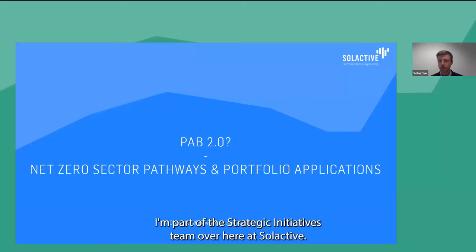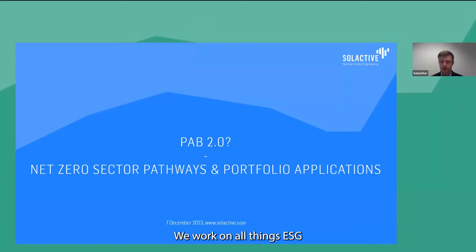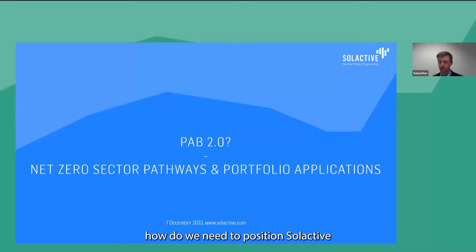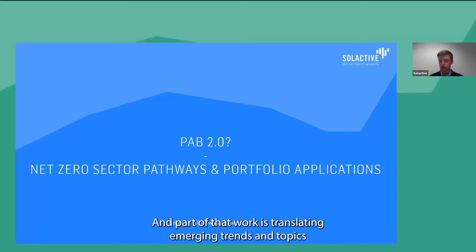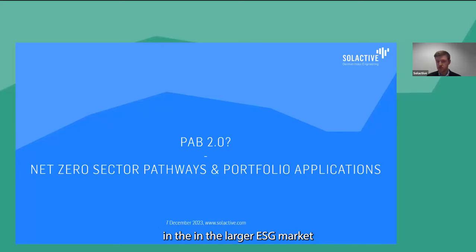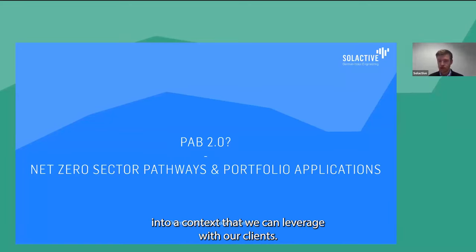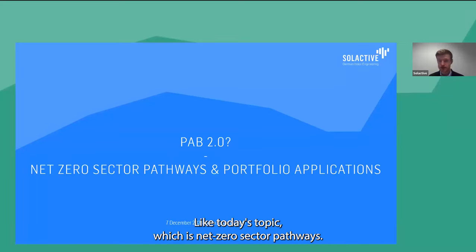My name is Florian Mueller. I'm part of the Strategic Initiatives team at Selective. We work on all things ESG from a strategic point of view — meaning how do we need to position Selective in terms of our expertise, our products, and our services to provide the best possible experience to our client base. Part of that work is translating emerging trends and topics in the larger ESG market into a context we can leverage with our clients, like today's topic: Net Zero Sector Pathways.